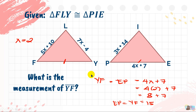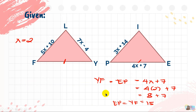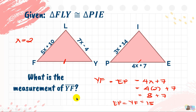To recap: from the first item of the Difficult Round, we solved for X equals 2. For the second item, we found the measurement of side YF, which is equivalent to side EP (4X plus 7). Substituting X equals 2 gives us 15. So side EP and side YF both equal 15.